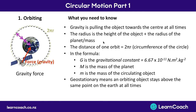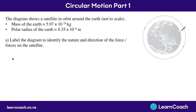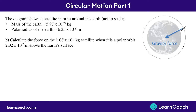Let's look at some exam questions. These are all from one previous exam. We have a diagram showing a satellite orbiting the Earth, and we're given the mass of the Earth and the polar radius of the Earth. The first question asks us to label the diagram to identify the nature and direction of the forces on the satellite. We know there's always a force towards the center, and for orbiting objects it's always a gravitational force, so we draw and label that arrow.